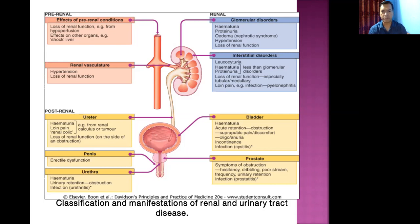In interstitial disorders, the interstitial space refers to the space between the nephrons — the functional units of the kidney. Common manifestations include leukocyturia (WBCs in urine), hematuria, proteinuria, and loss of renal function. In infections such as pyelonephritis, loin pain is also commonly seen.